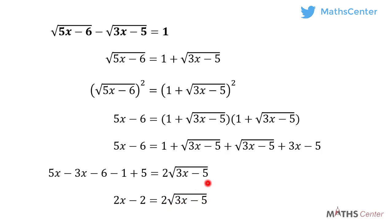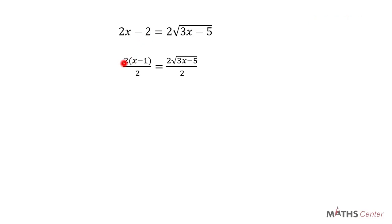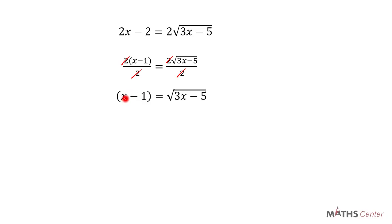Let's simplify further. 2 is a factor on both sides, so I will divide both sides by 2. On the left hand side, 2x minus 2 factorized is 2 times bracket x minus 1, and dividing by 2 gives x minus 1. On the right hand side, 2 root of 3x minus 5 divided by 2 gives root of 3x minus 5. So we have x minus 1 equals the square root of 3x minus 5.